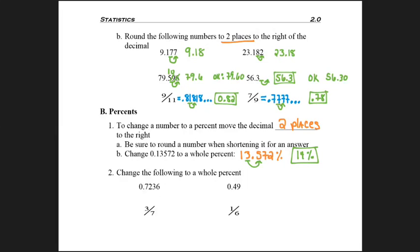Let's continue with these problems on the bottom where everything is changed to a whole percentage. Looking at that first number, .7236, move the decimal over two, and then round. The .72 had a 3 after it and stays 72%.